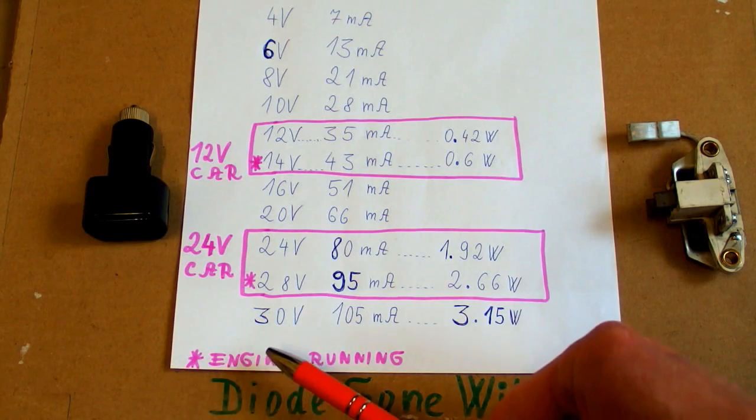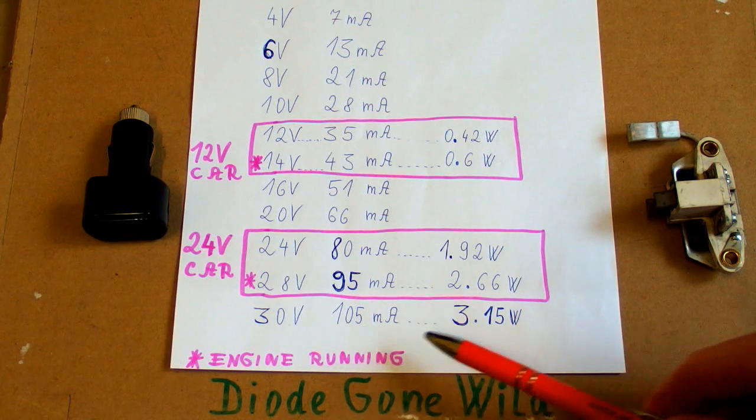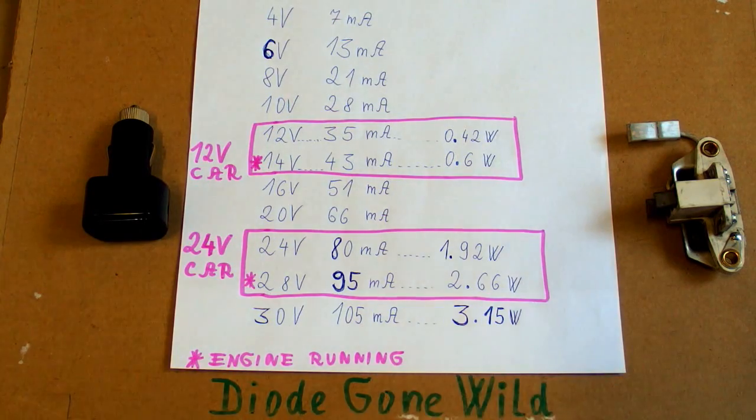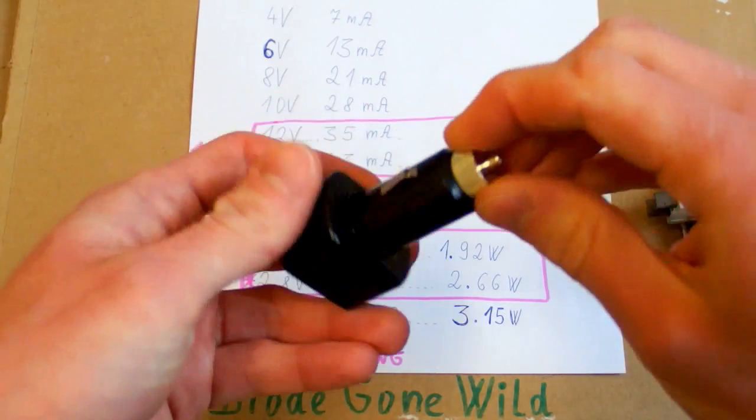The maximum voltage of this voltmeter is 30 volts. At this voltage it draws 105 milliamps and dissipates 3.15 watts. And that's a really crazy power. So let's take a look inside and see what's actually drawing so much power in it.